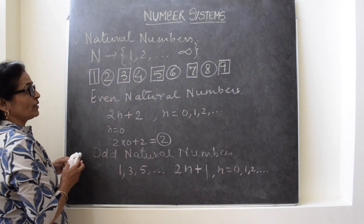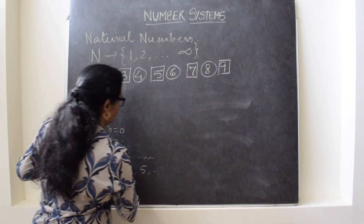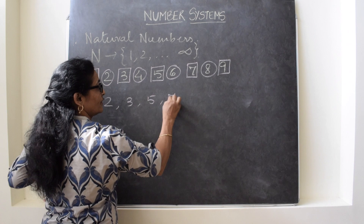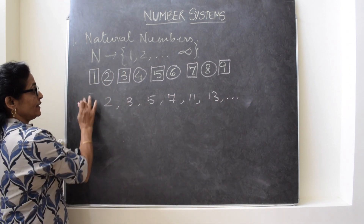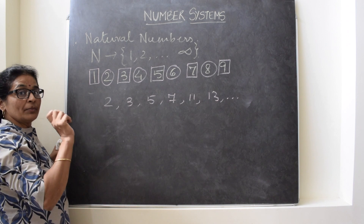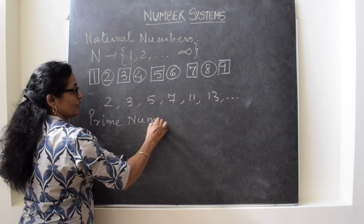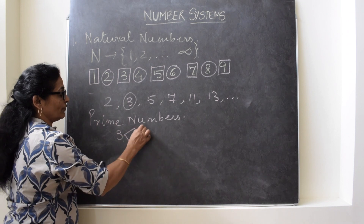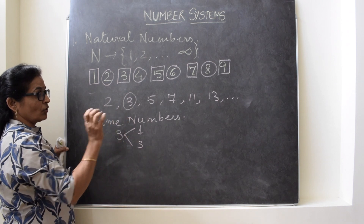Now in these natural numbers there are different other types of numbers also. If we write 2, 3, 5, 7, 11, 13 and so on — these types of numbers which have only two factors, one and the number itself, they are named as prime numbers. For example, if you take the number 3, it has only 1 and 3, meaning exactly two factors. So these are called prime numbers.